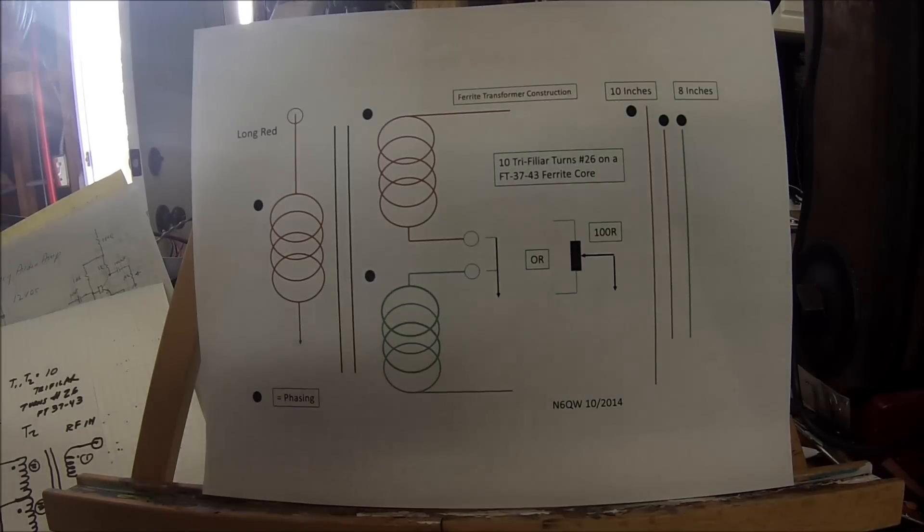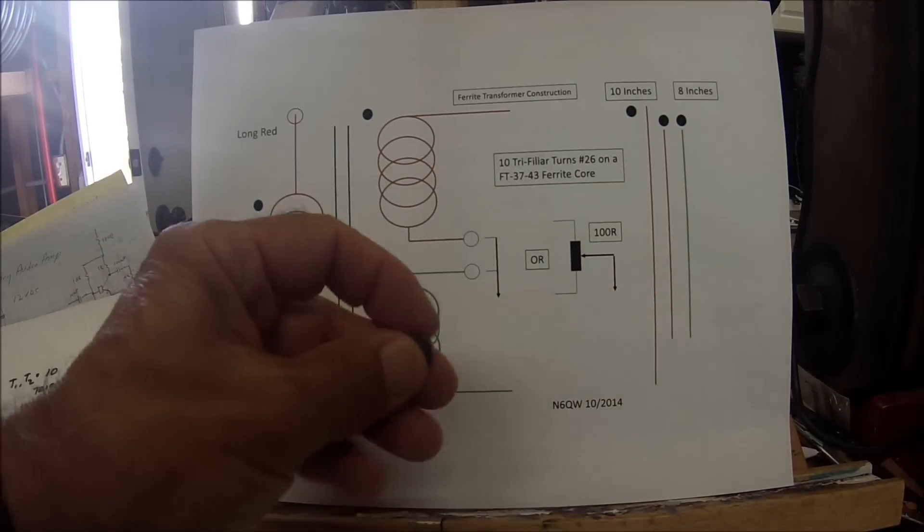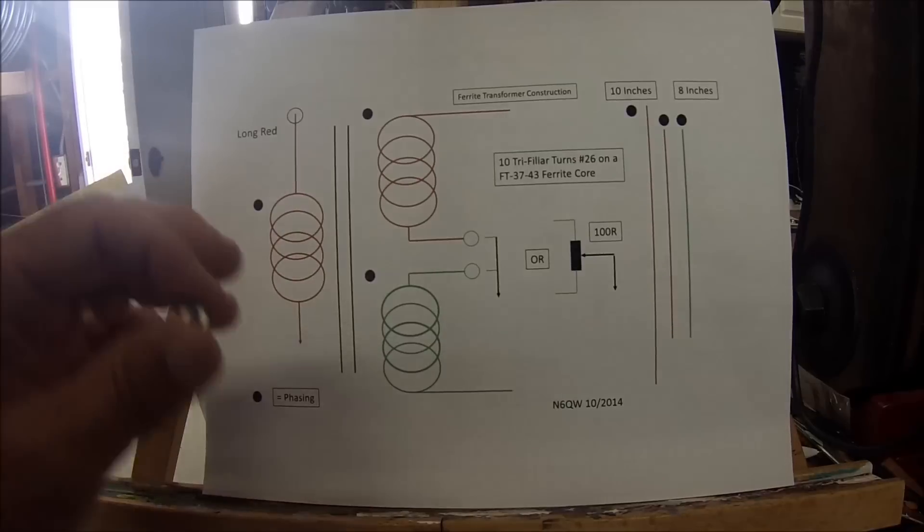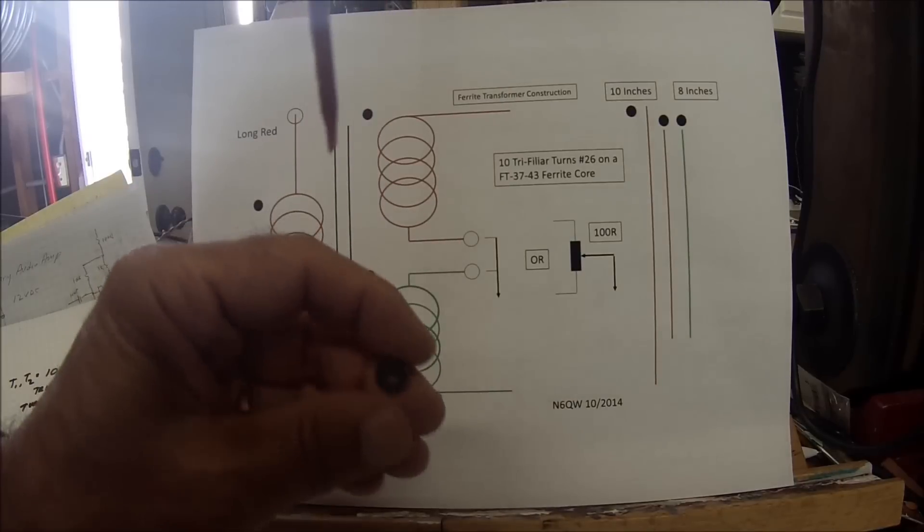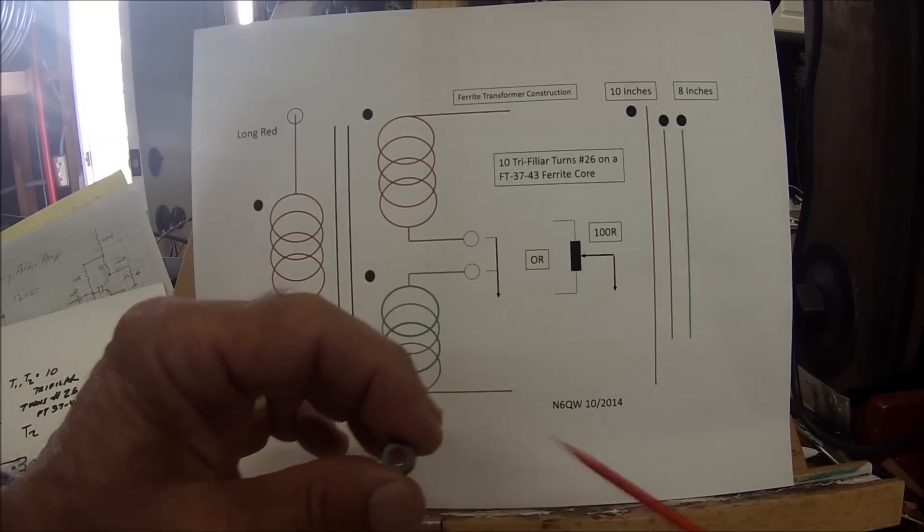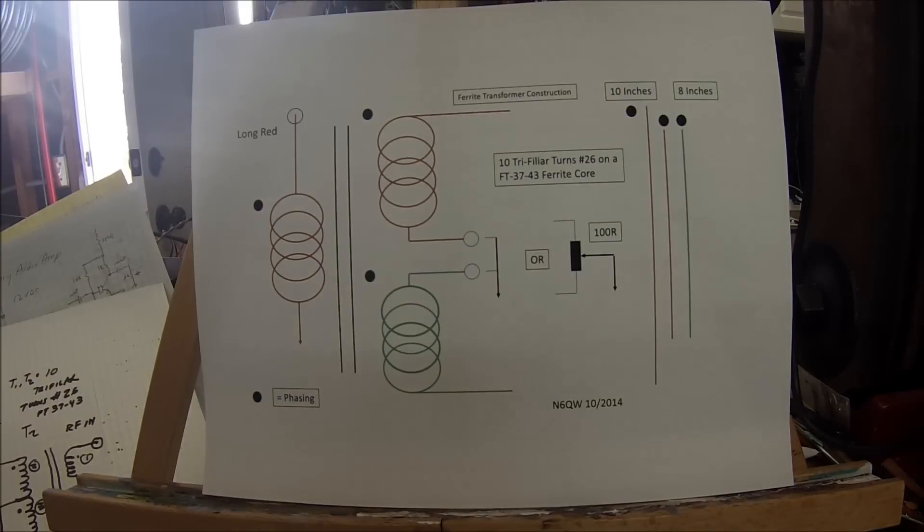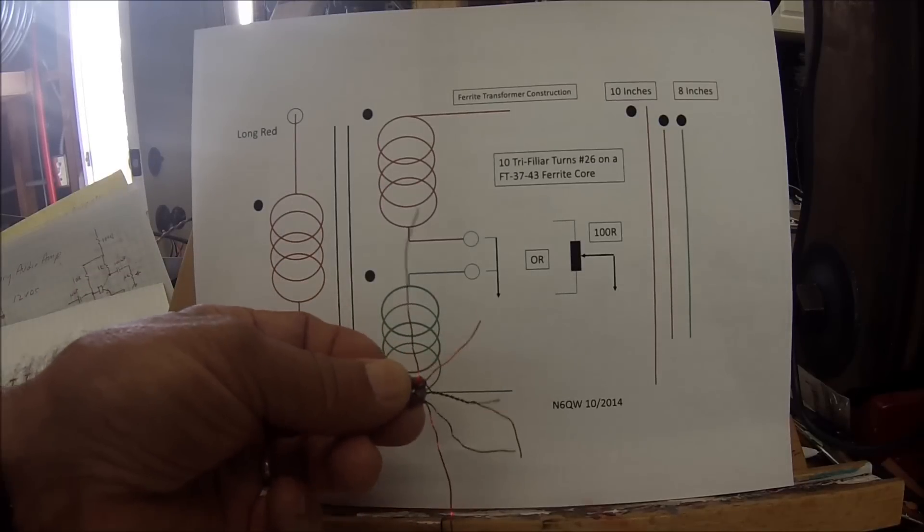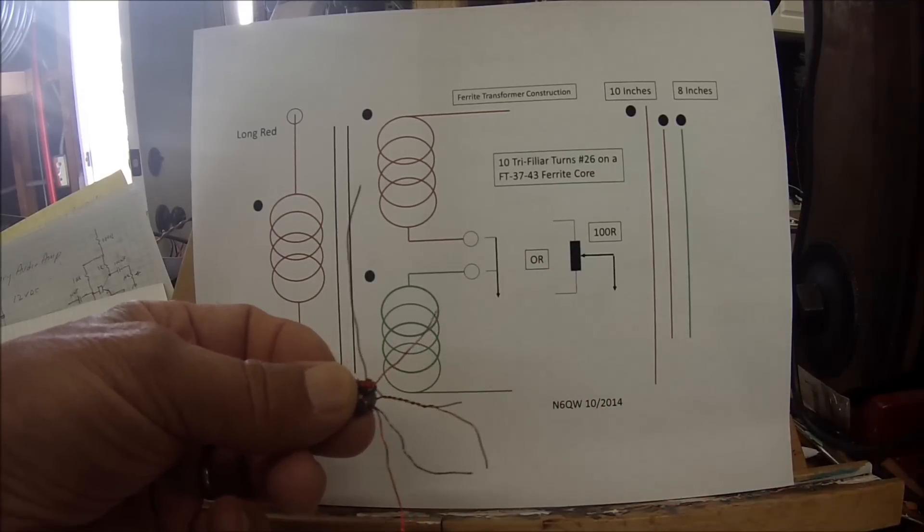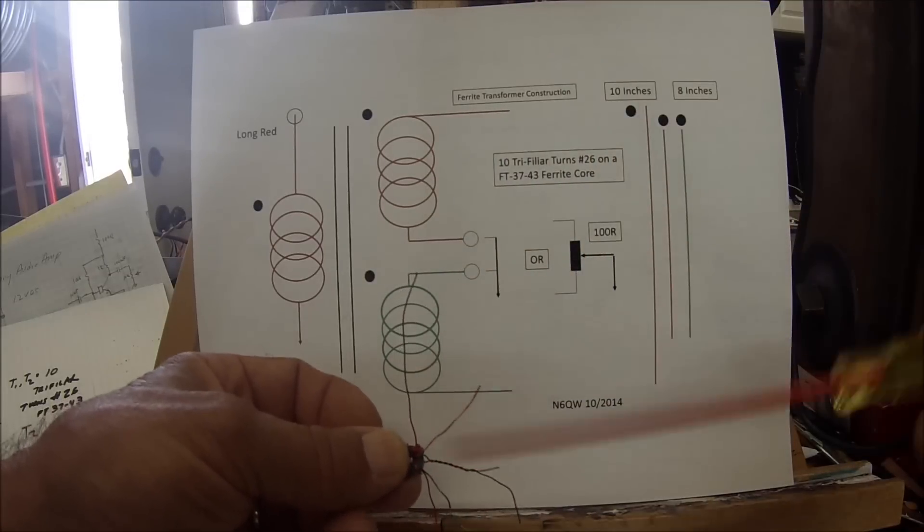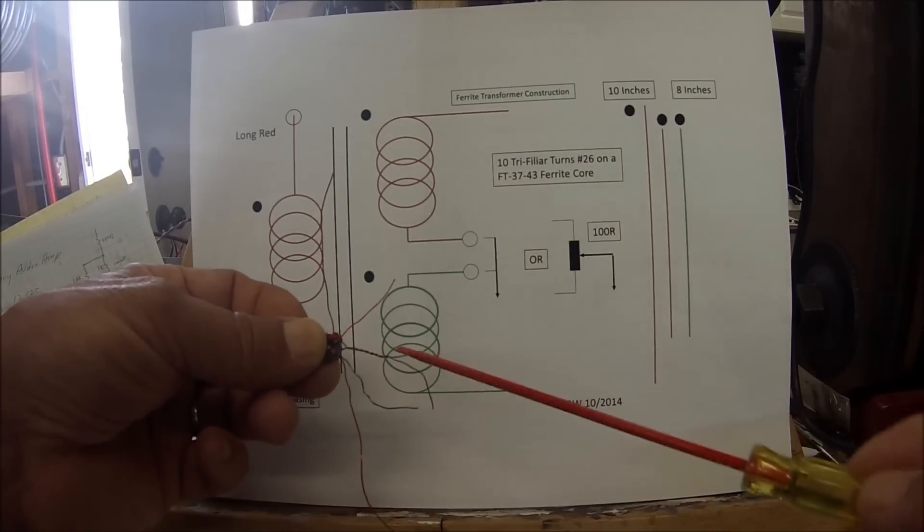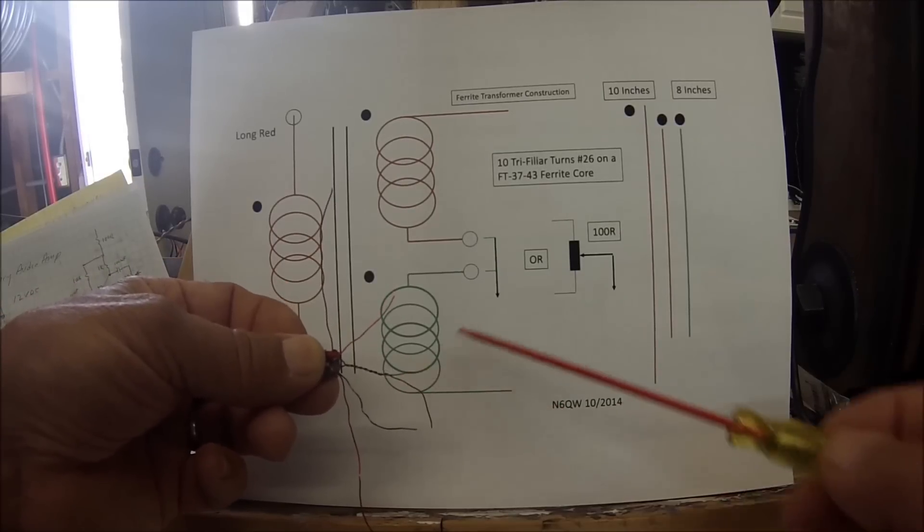Once you do this whole length, you feed it through this ferrite core, an FT37-43. Feed it through the core, starting at this end, through and around. This length of 8 inches and 10 inches will give you 10 turns on the 37-43 core. Once you're done winding, these longer two leads represent this lead here. I always pick this end as the start - the phasing. I took the end of the red wire and connected it to the start of the green wire.